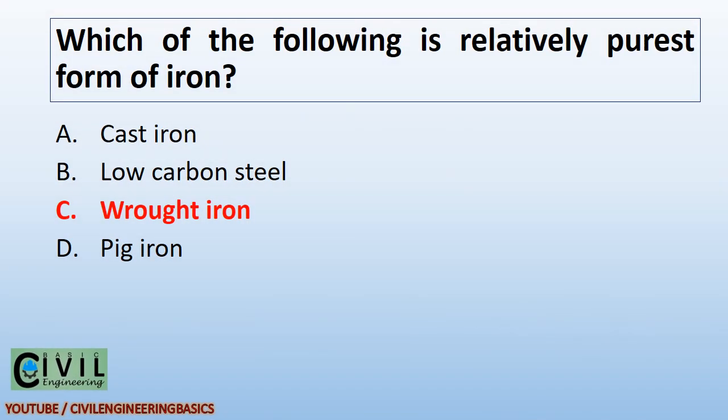Which of the following is the relatively purest form of iron? Wrought iron is the relatively purest form of iron.